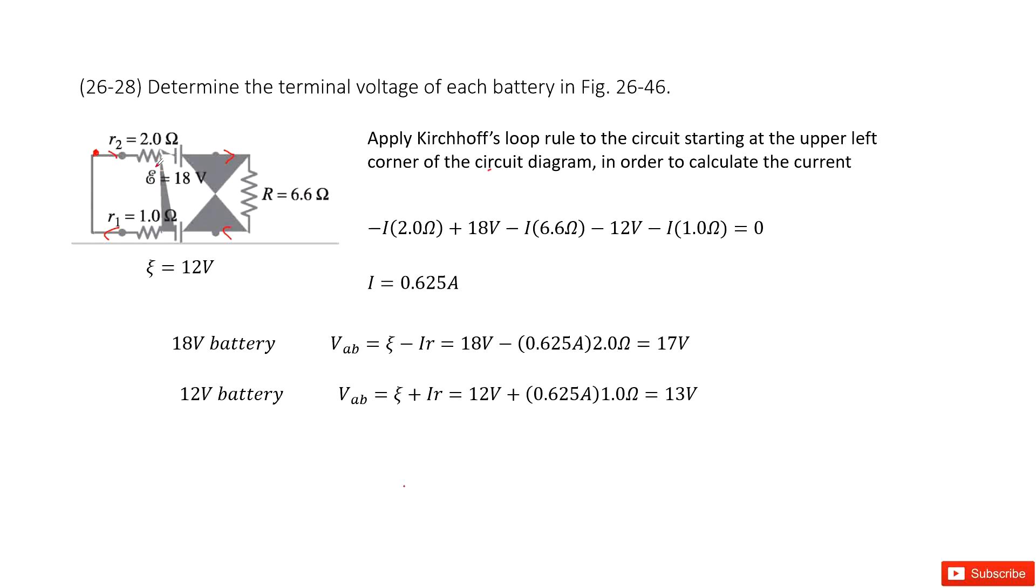We can apply Kirchhoff's loop rule to the circuit starting at the upper left corner. And we can see from this starting point, the current goes through R2, voltage decreases. So negative I times R2 plus the EMF for battery 18 volts, and then goes through the external resistance R.